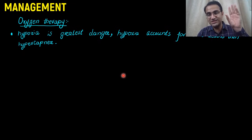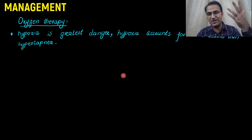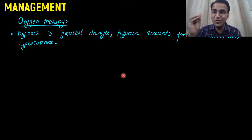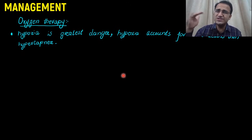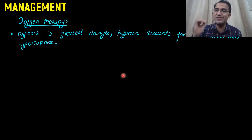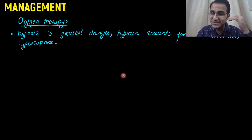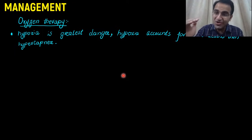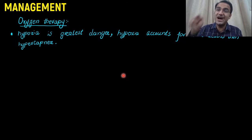Whenever CO2 retention occurs, it causes the brain's respiratory center to stimulate breathing and wash out carbon dioxide. In COPD patients, however, they always have chronic CO2 retention. So their respiratory centers get resistant to excess CO2, and CO2 does not drive the respiratory center in COPD patients. In normal individuals, carbon dioxide drives the respiratory center; in COPD patients, it does not. What drives the respiratory center in COPD patients is hypoxia.